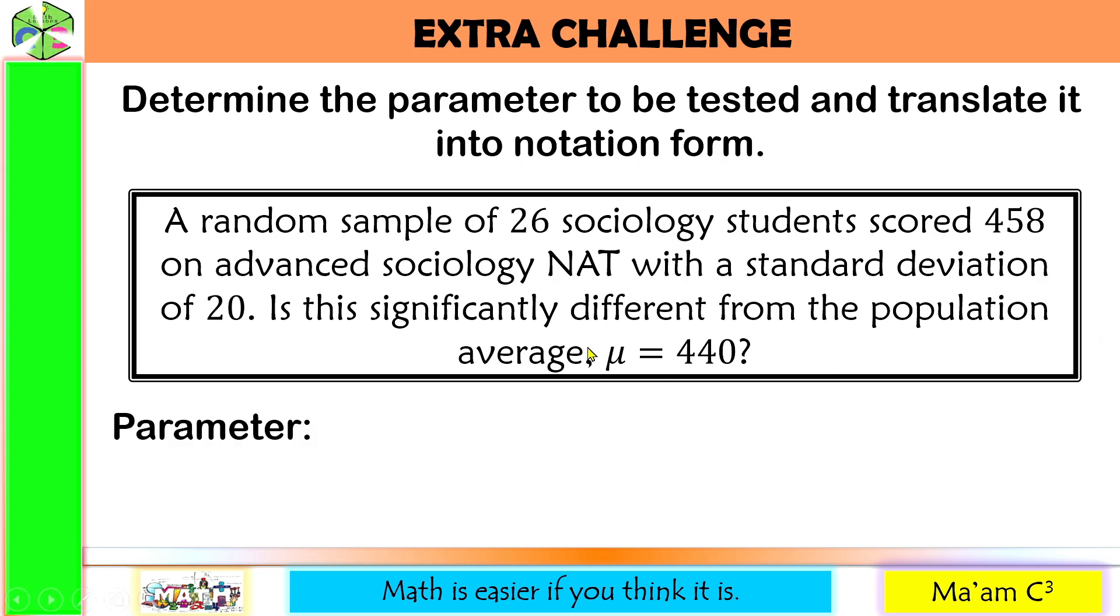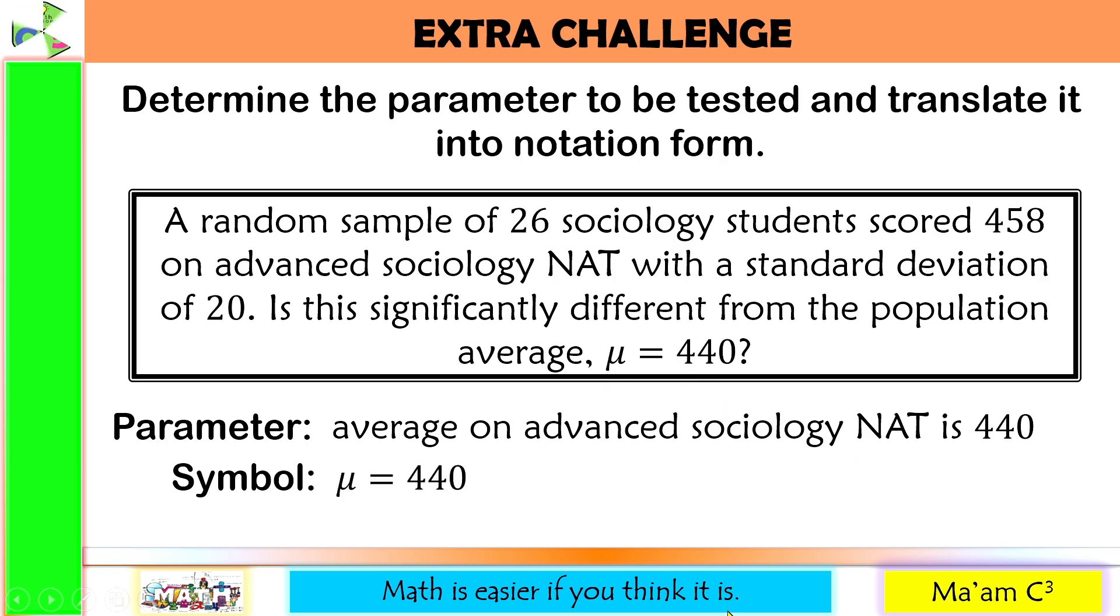For the parameter, we are given here the population mean. So this will be our parameter. Average on Advanced Sociology National Achievement Test is 440. In symbol, that would be mu is equal to 440.